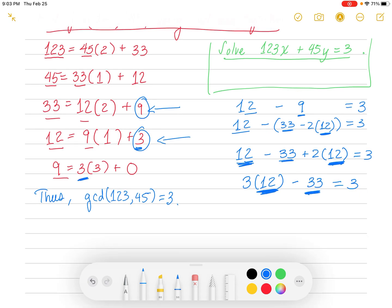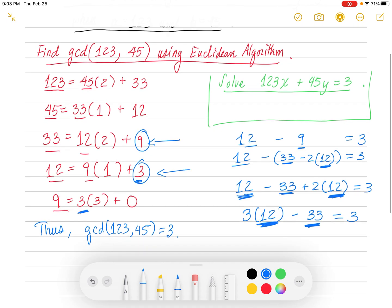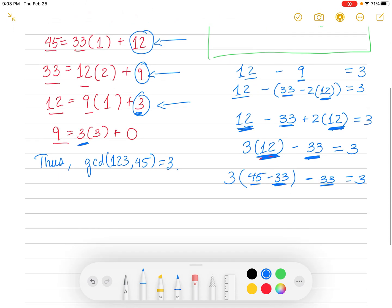Our underlined numbers are now 12 and 33. We're not up to 45 and 123, so we're going to have to do another replacement. So we're going to replace this time the 12. We're going to go to the next equation where the remainder is 12, and we're going to keep the 3, that coefficient, and we're going to replace that 12 with 45 minus 33. And don't forget we have a minus 33 here that's underlined, and equals 3.